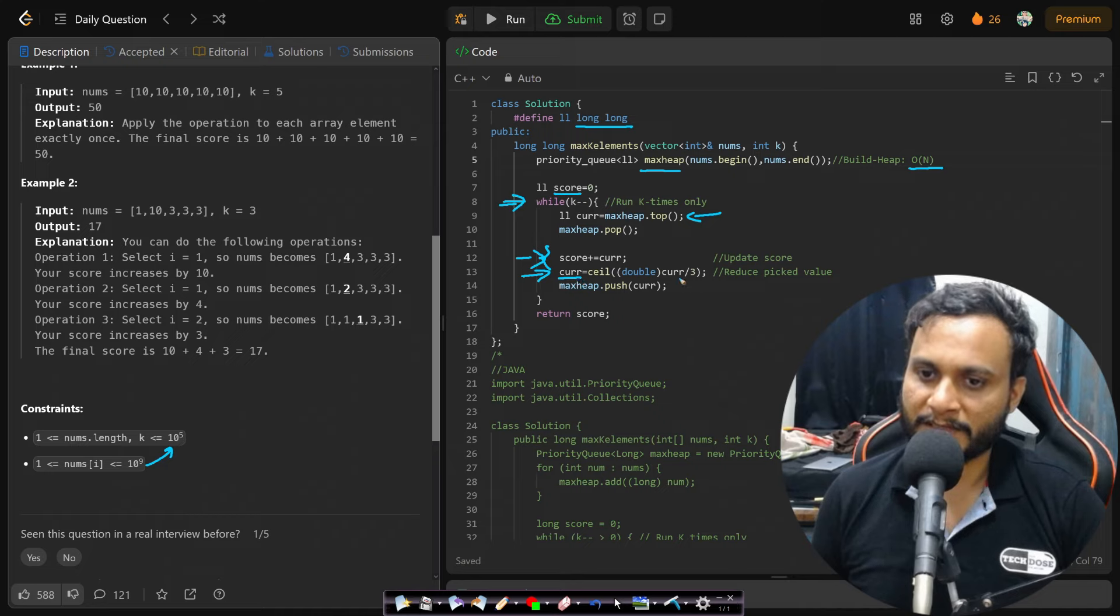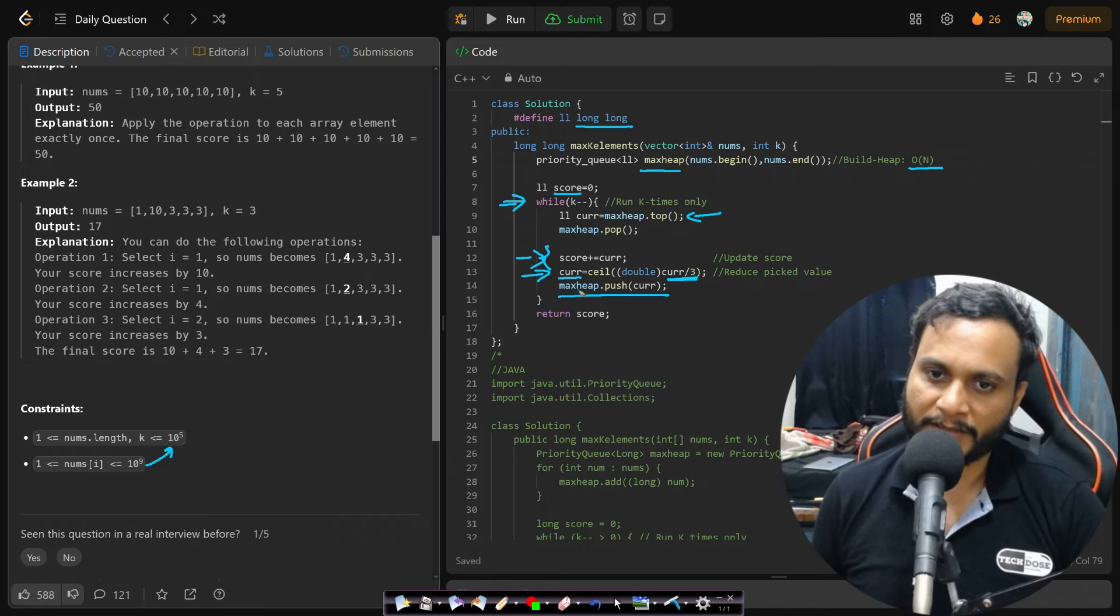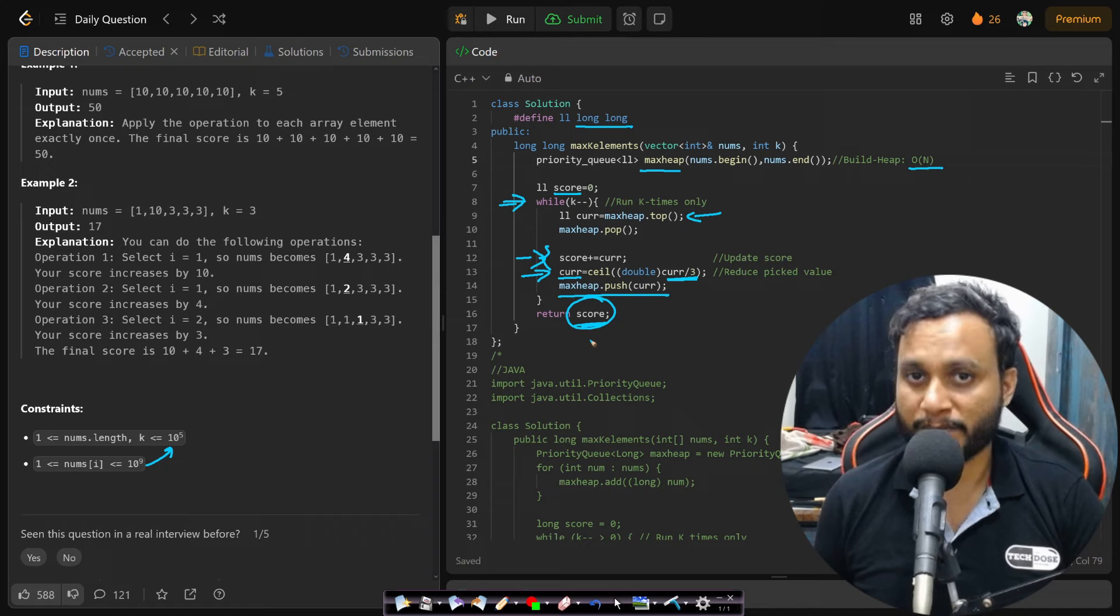Then adding it to the score and updating the current value which was picked from the heap by taking the ceiling of current by 3, and then again pushing it back into the max heap. If I repeat it k times, then after that whatever is the score will be definitely the maximum possible score.